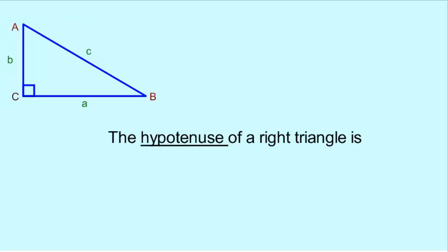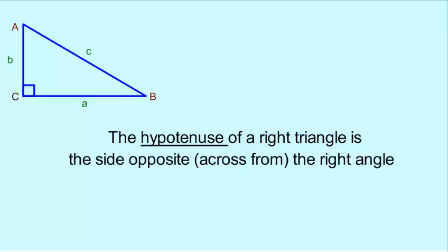The hypotenuse of a right triangle. The hypotenuse of a right triangle is simply the side that's opposite from the right angle. Angle C is the right angle. The side opposite is side C over here. That makes side C the hypotenuse.